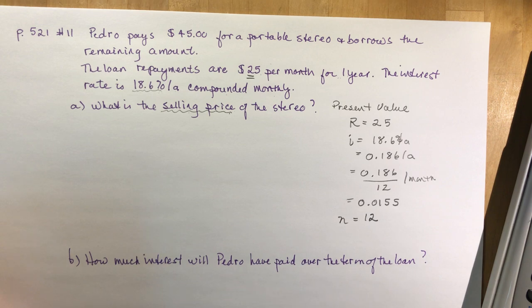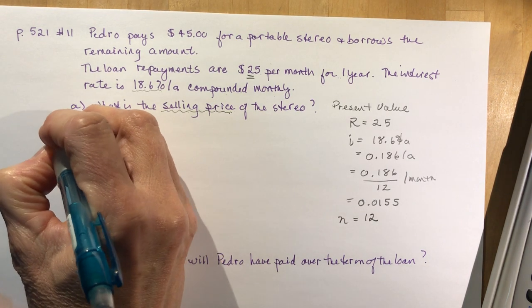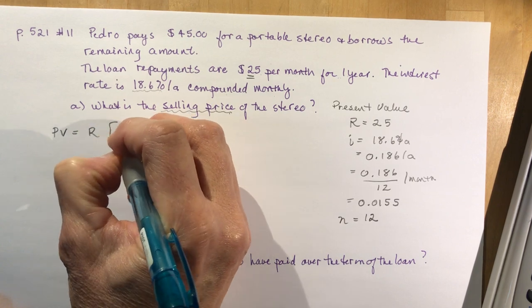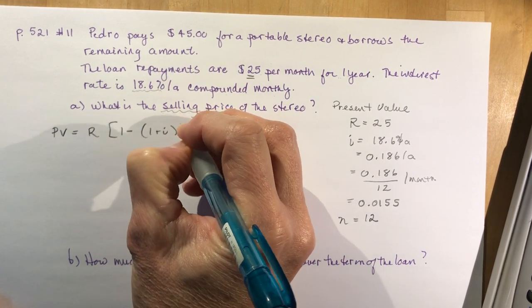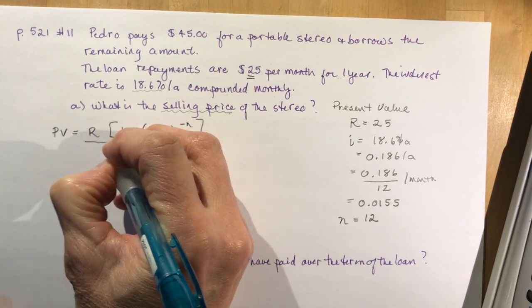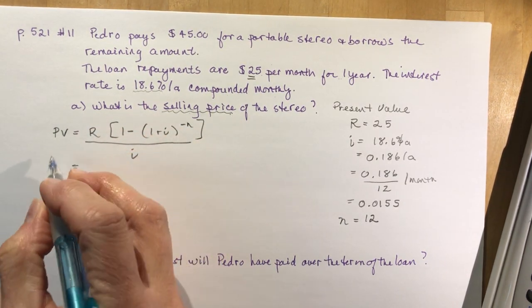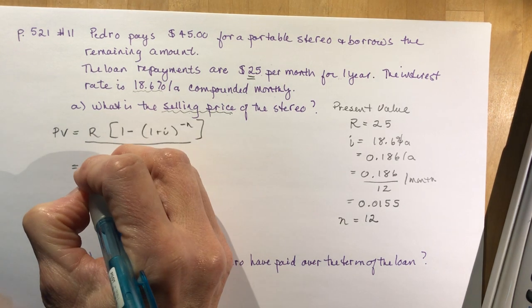Now again, you want to write out your formula. So PV equals R times [1-(1+i)^(-n)] close the bracket, over i. I'm trying to solve for present value. That's okay, leave that there.